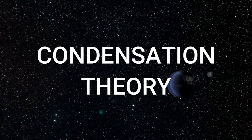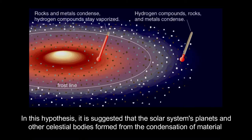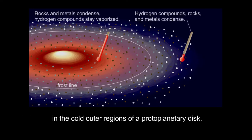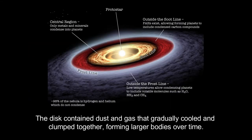Number 4: The Condensation Theory. In this hypothesis, it is suggested that the solar system's planets and other celestial bodies formed from the condensation of material in the cold outer regions of a protoplanetary disk. The disk contained dust and gas that gradually cooled and clumped together, forming larger bodies over time.